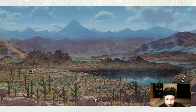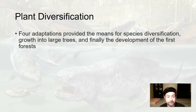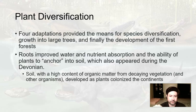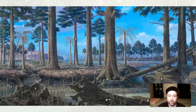At the start of the Devonian, land looked like mostly weathering, erosion, lots of rocks, and weird little plants. But there were four adaptations that provided the means for vast and quick — geologically speaking — species diversification during the Paleozoic era, allowing plants to eventually evolve into large trees and forests. The first adaptation was roots: roots improve water and nutrient absorption, and plants can anchor into the soil.